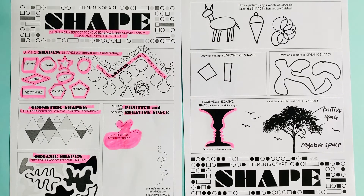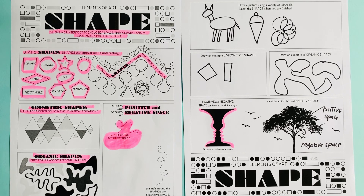We're going to use the knowledge we learned about positive and negative space to create the next section of our design booklets, where we will use shape to draw the object that we have chosen.